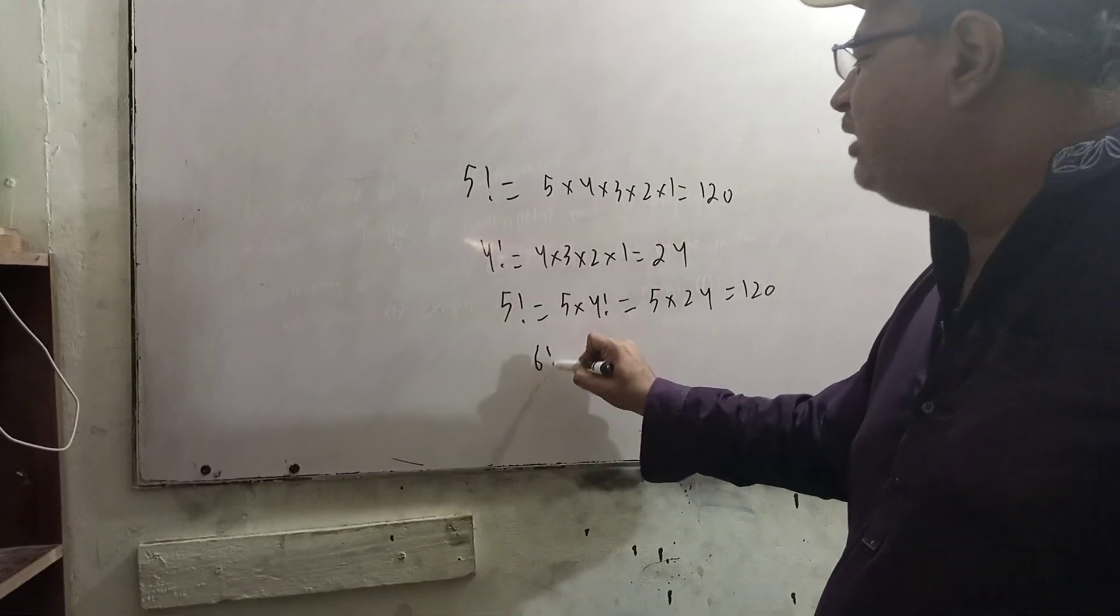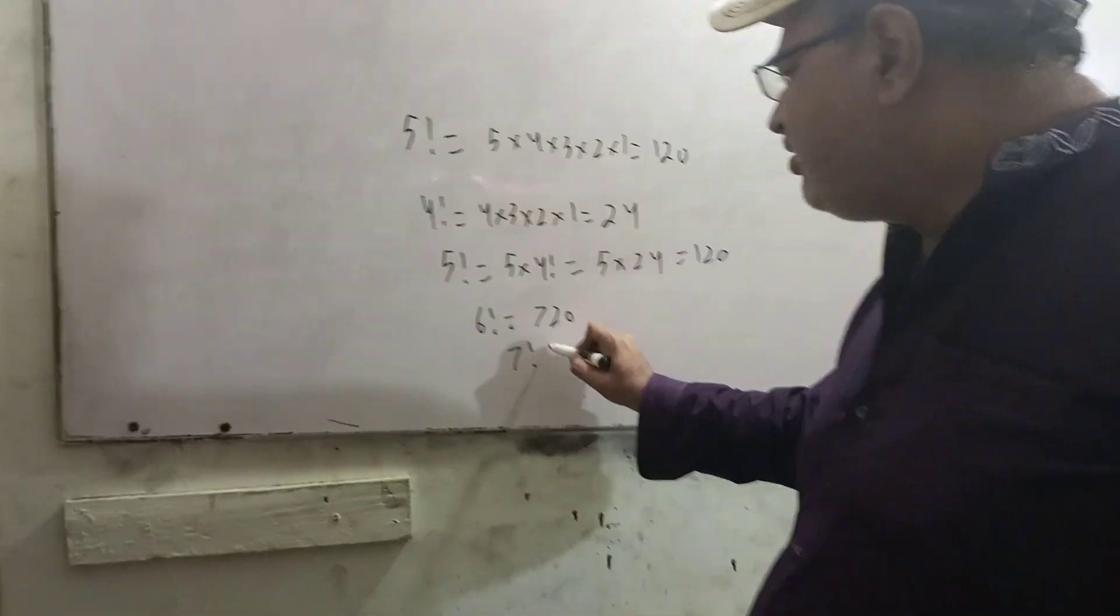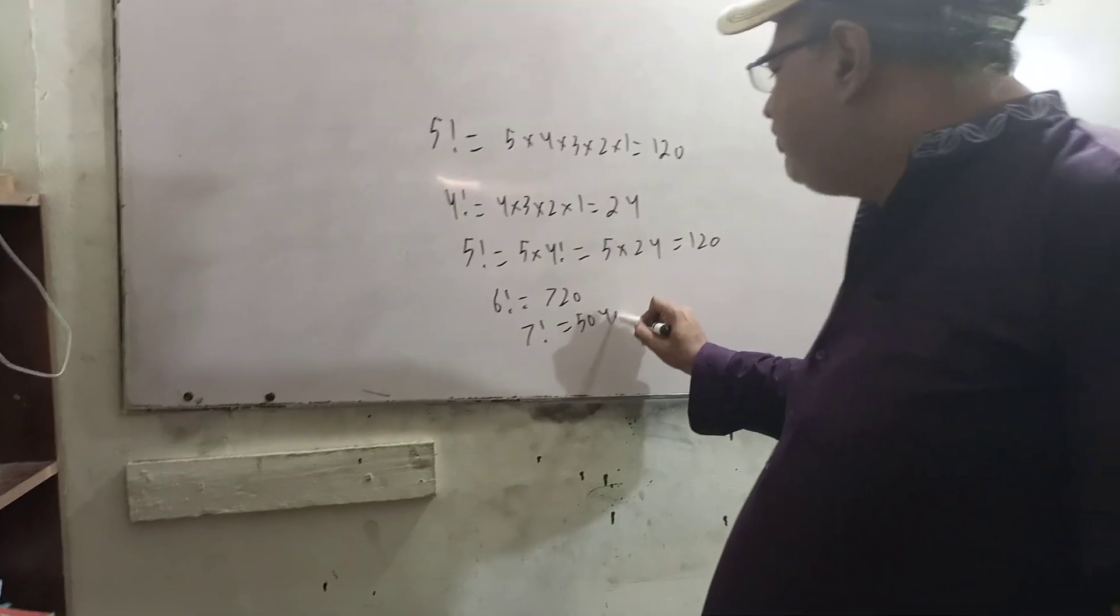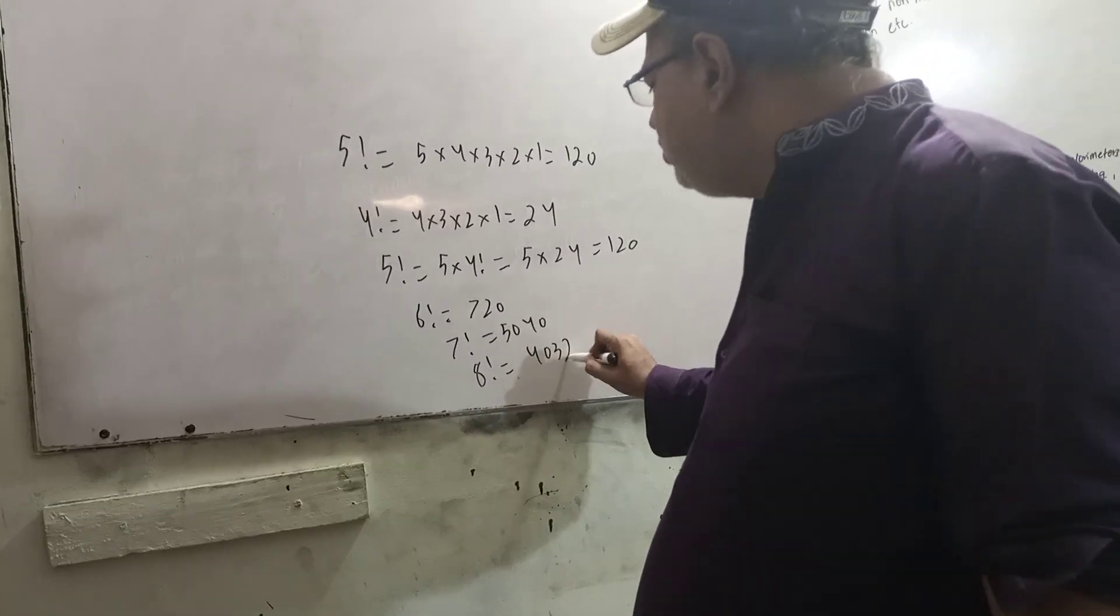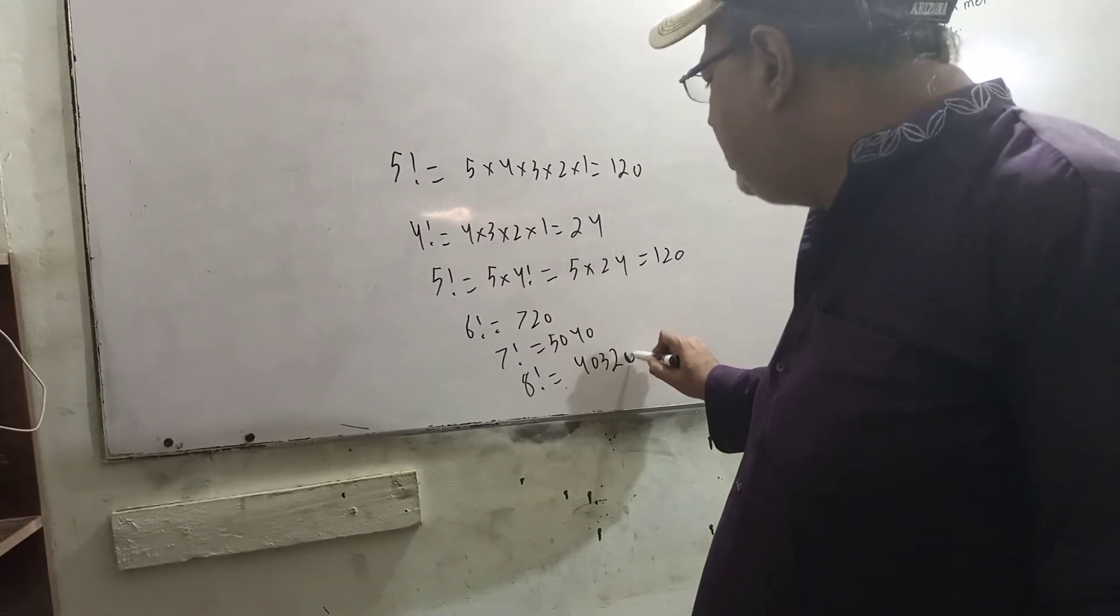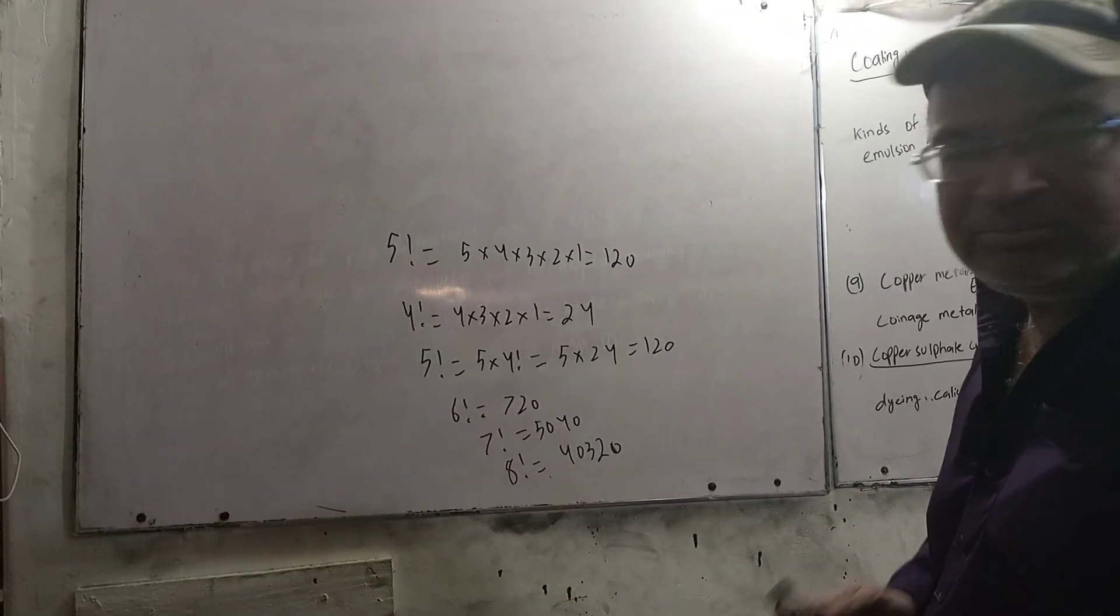Now, where are the factorials? Well, 6 factorial is 720, 7 factorial is 5040, 8 factorial is 40320. You should have to remember these factorials. It could be difficult to calculate the factorial.